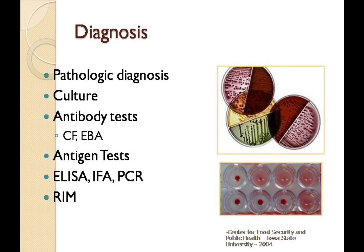Diagnosis of avian chlamydiosis may include pathologic diagnosis, culture, tests for antibody, tests for antigen, and other tests such as rapid immunomigration. There are no gross pathognomonic lesions with Chlamydophila psittaci, but staining of tissue or impression smears may identify the organism. Culture is recommended in conjunction with other forms of diagnosis; specialized lab facilities are required. Antibody tests include complement fixation and elementary body agglutination. Antigen tests include ELISA, IFA and PCR.